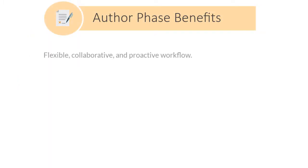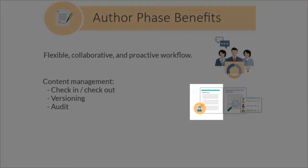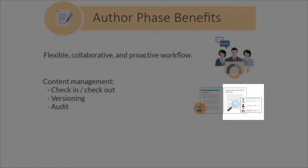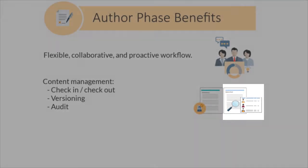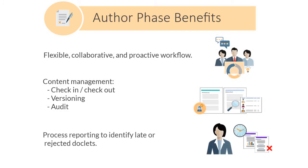The author phase provides these benefits. Flexible, collaborative, and proactive workflow — many users can contribute to content, and to reduce bottlenecks for rapid development, top-level users can take ownership of doclets. Content management: check-in and check-out ensures that only one user at a time can update a doclet, removing the risk of content being overwritten. Version control ensures that each version is stored, so you'll always have a reference point. Detailed audit ensures that you can track all user activity, and process reporting helps you identify doclets that are behind schedule or that have been rejected.